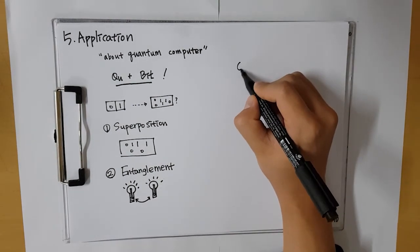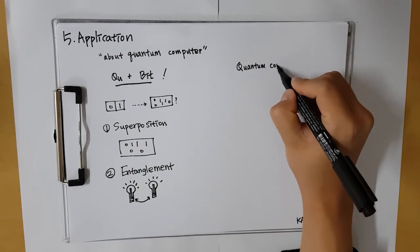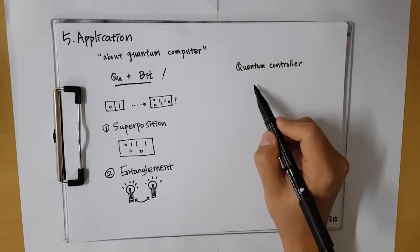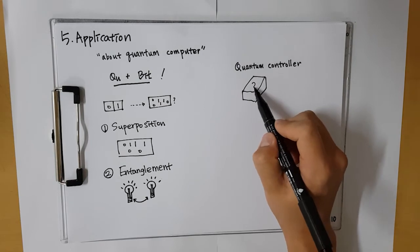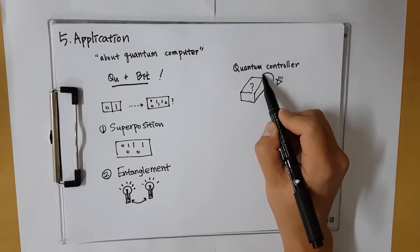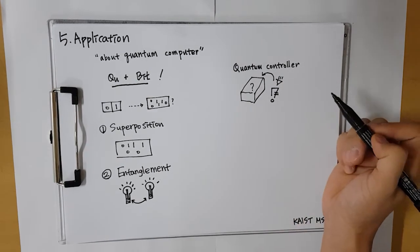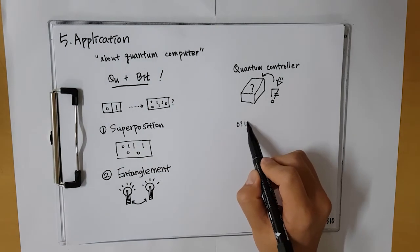In quantum world, quantum superposition is broken by measuring process. To solve this problem, quantum computers use quantum controller. NV centers are used for maintaining qubit stability in the controller. The quantum controller does not go through measuring process.